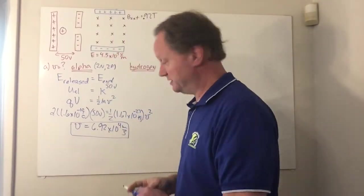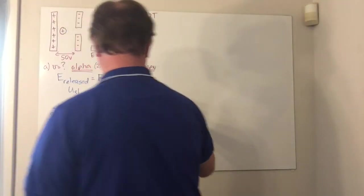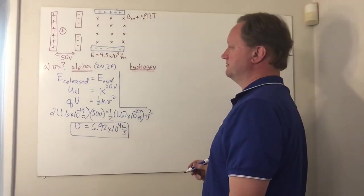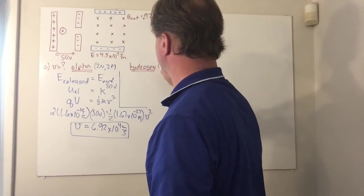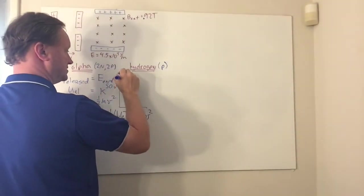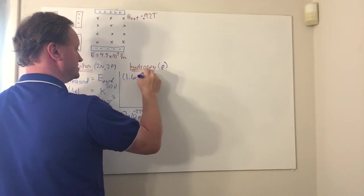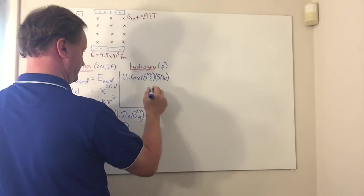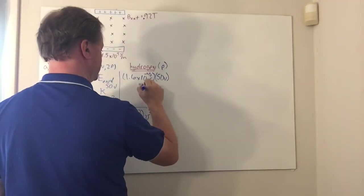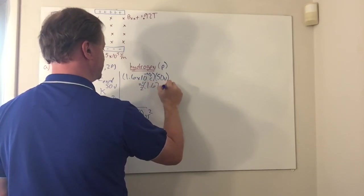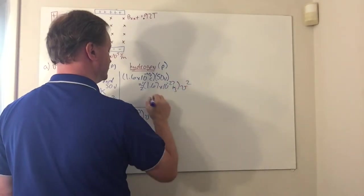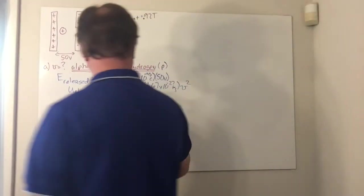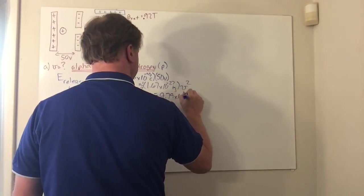For the hydrogen atom, we apply the same logic. A hydrogen atom has a nucleus that is just one proton. Plugging into Q times V: 1.6×10⁻¹⁹ coulombs multiplied by the 50 volts equals one half times 1.67×10⁻²⁷ kilograms times V squared. Solving for V gives a value of 9.79×10⁴ meters per second.